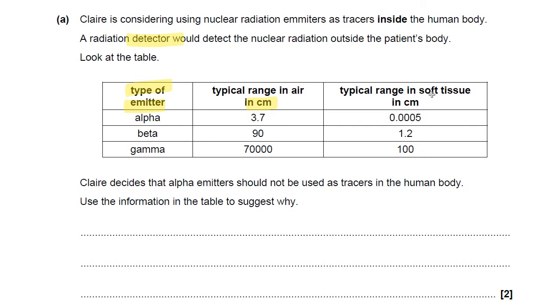Typical range in soft tissue: alpha is very, very low; beta is pretty low; and gamma is reasonably low.